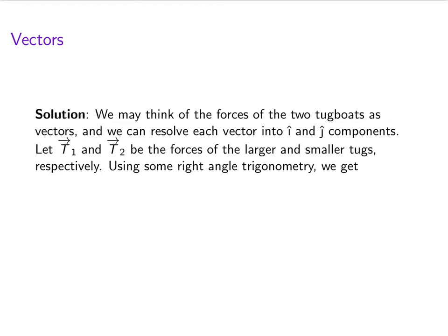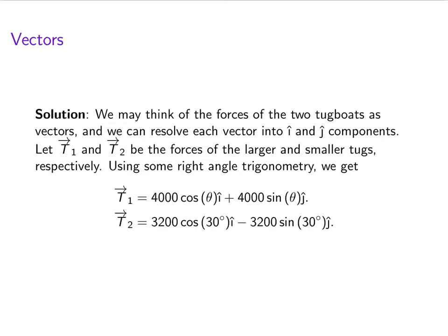Alright, let's use some right angle trigonometry. We'll be able to resolve T1 and T2 into components. T1 will be 4000 cosine theta i plus 4000 sine theta j, whereas T2 is 3200 cosine 30 degrees i minus 3200 sine 30 degrees j. Notice that this one is minus because the j component of the T2 vector is negative since it's pointing down into the fourth quadrant.